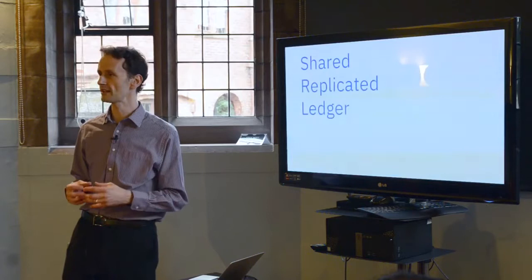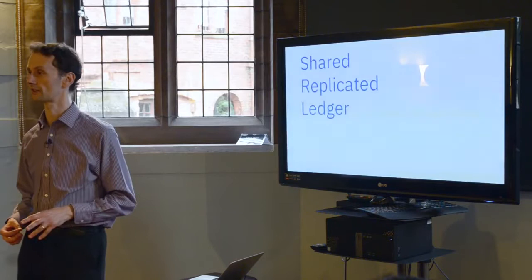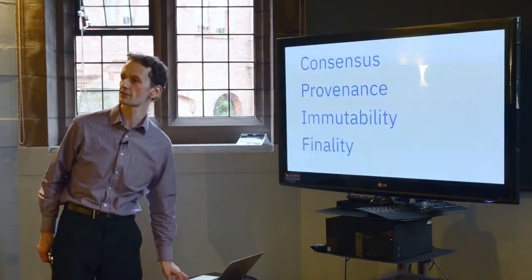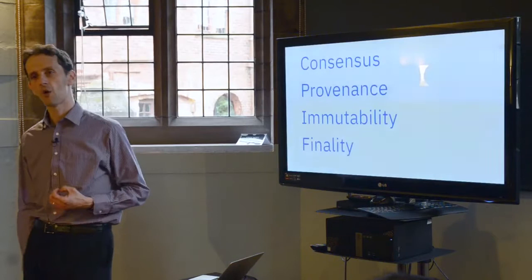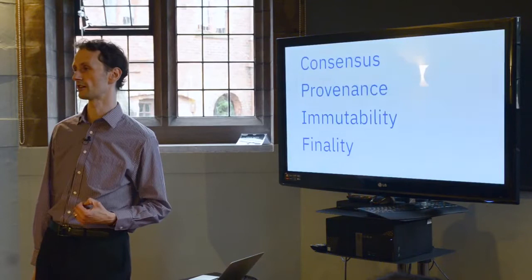Every single blockchain in existence, though, aims to solve this problem of trust. So that when you add a transaction to a blockchain, it's irrefutable that that transaction occurred. What does that mean? The blockchain actually has four qualities of service. And these are the four ones that you can see here. The first one is consensus. And that means that the relevant counterparties associated with the transaction will have agreed, consensus just means agreement, will have agreed that the transaction occurred.